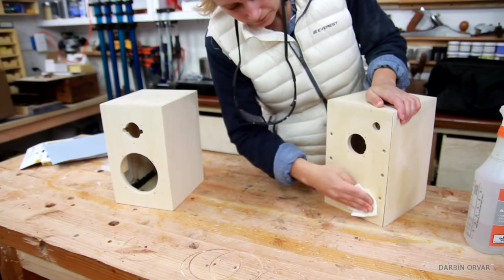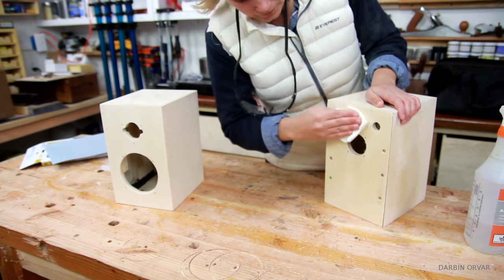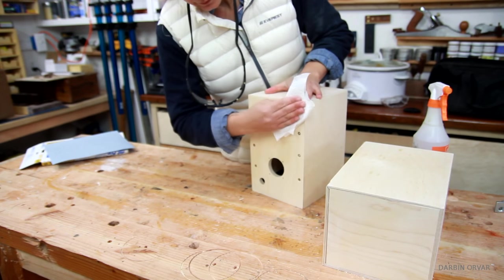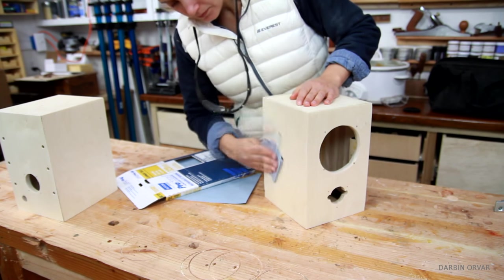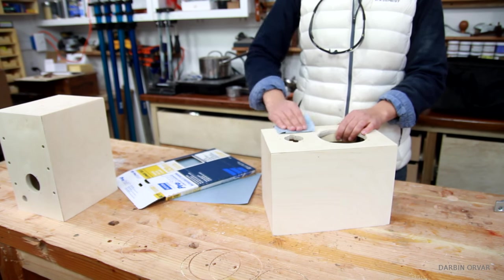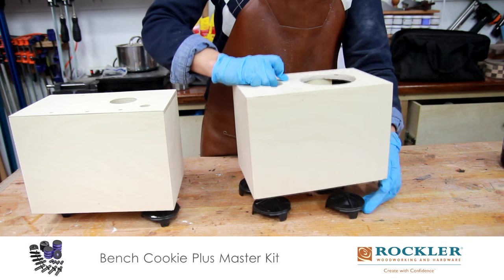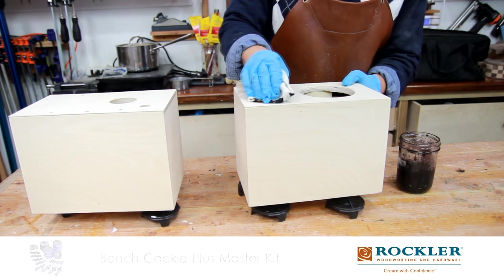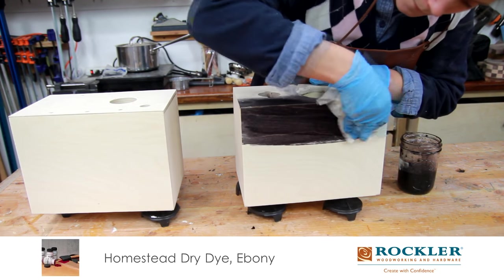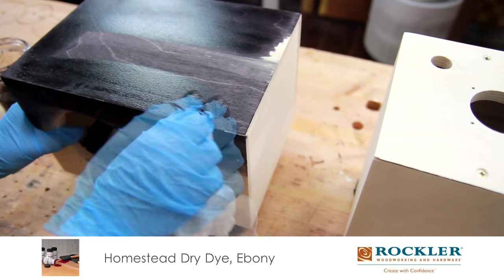In terms of finish, I wanted these to look really classic and sleek, so I decided to go with an ebony dye. Here you can see that I'm first raising the grain and sanding it down before applying the dye. I really like dye, it doesn't smell like stain, and it dries really quickly, and it really comes out great.